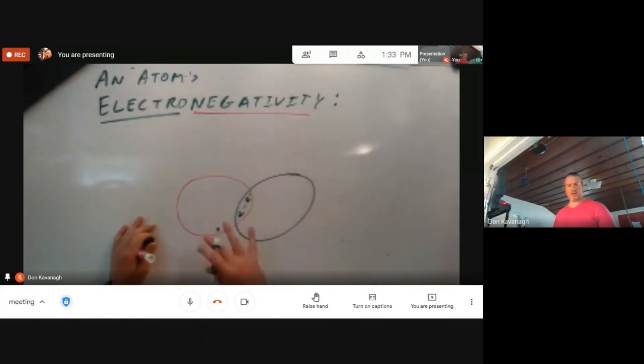The pulling of the electrons by those atoms is not going to be equal. It's not going to be 50-50. There is going to be one atom that literally pulls the electrons closer to it.